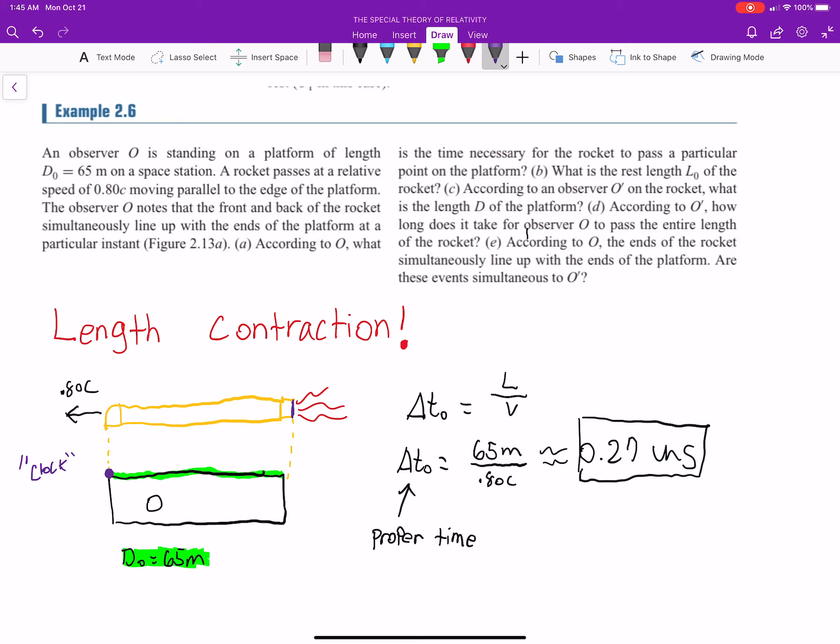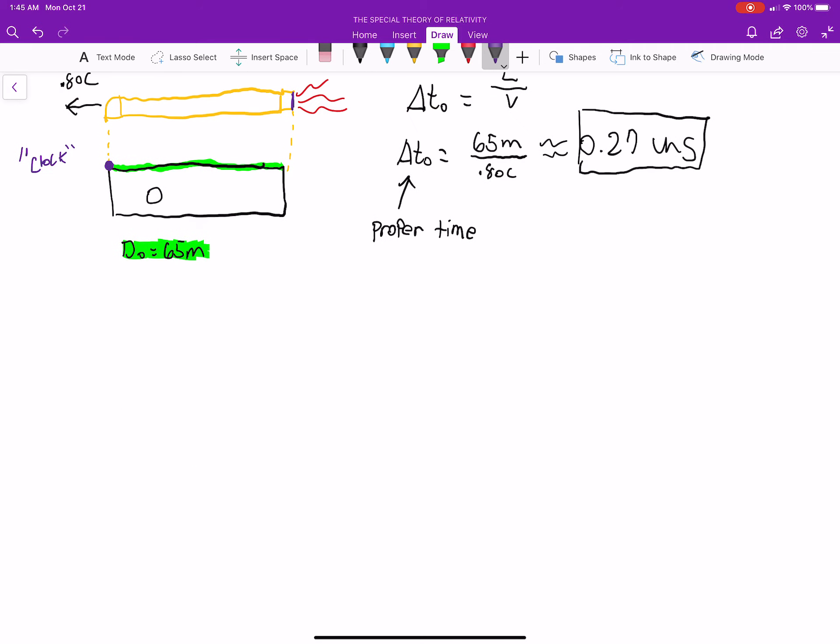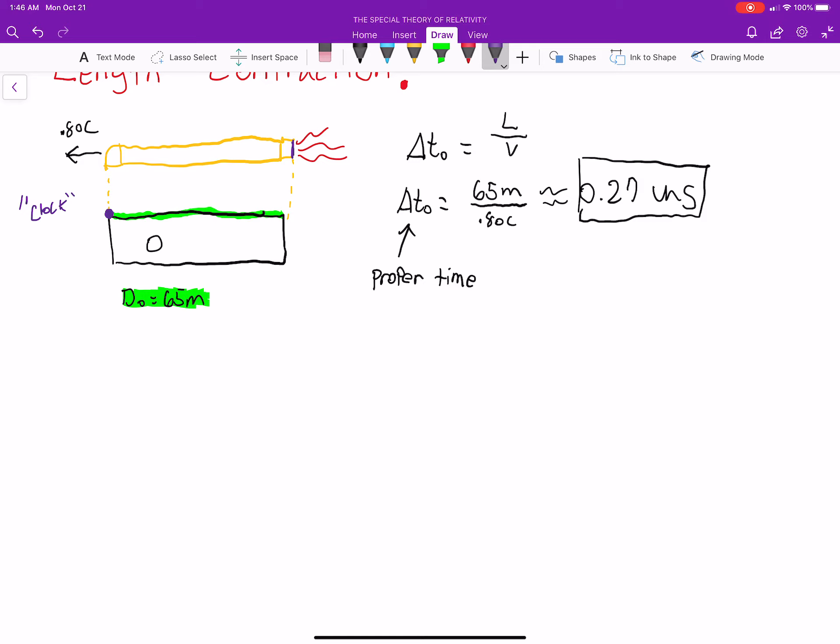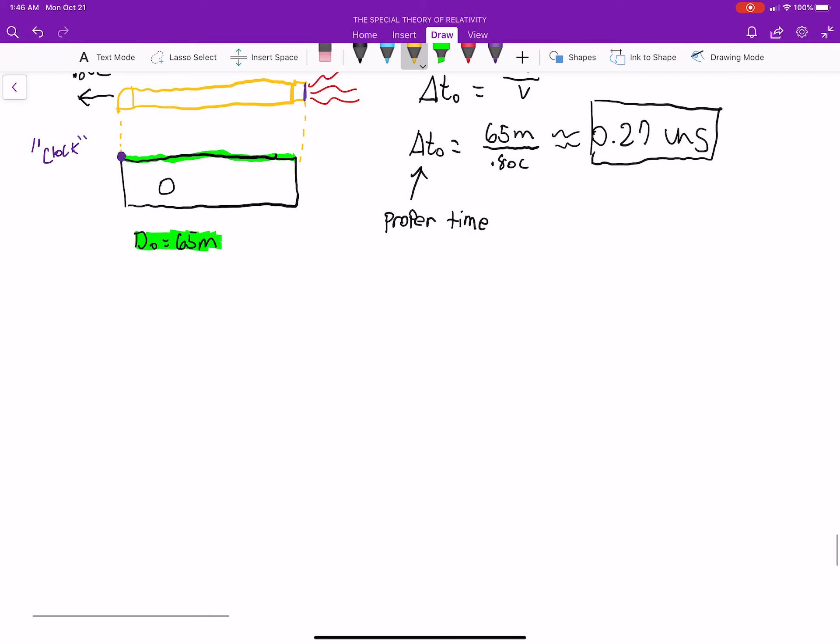Part B. What is the rest length L-naught of the rocket? Okay, so just so this picture makes more sense, O is looking at this rocket with length contraction. So this picture that I drew, this is what O sees. But in reality, maybe the ship is significantly bigger. Maybe this is actually the size. L-naught. Maybe that's the rest length.